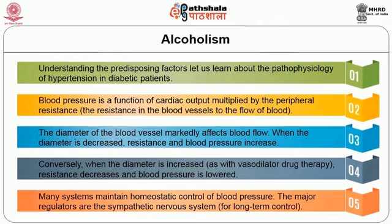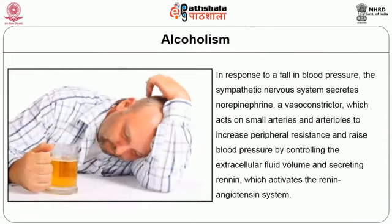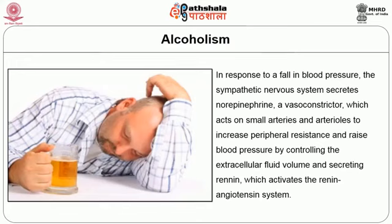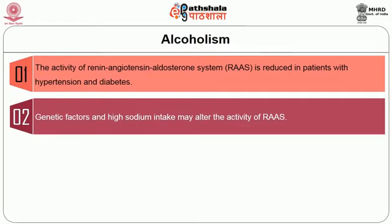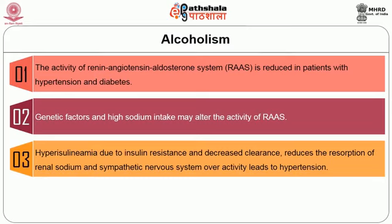The major regulators are the sympathetic nervous system for long-term control. In response to a fall in blood pressure, the sympathetic nervous system secretes norepinephrine, a vasoconstrictor which acts on the small arteries and arterioles and increases peripheral resistance, thus raising blood pressure by controlling the extracellular fluid volume and secreting renin which activates the renin-angiotensin system. The activity of the renin-angiotensin-aldosterone system is reduced in patients with hypertension and diabetes. Genetic factors and high sodium intake may alter the activity of the renin-angiotensin system.